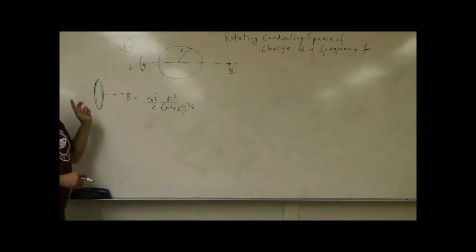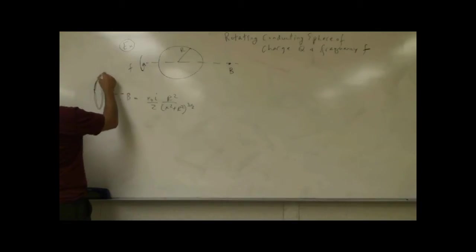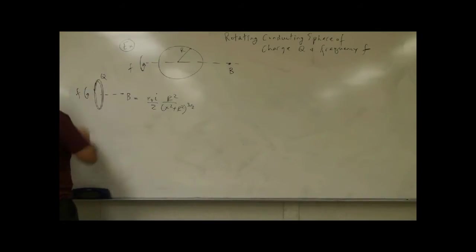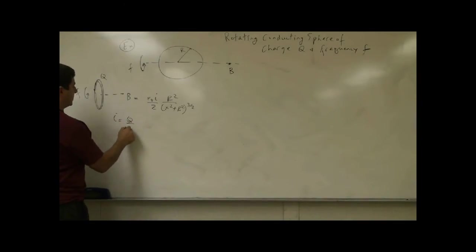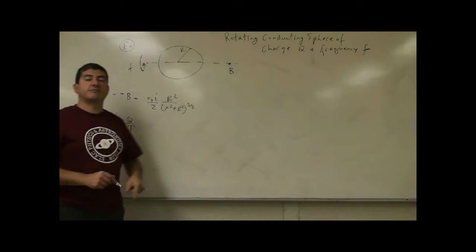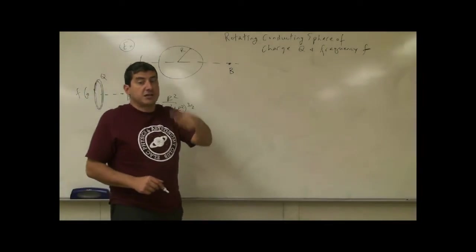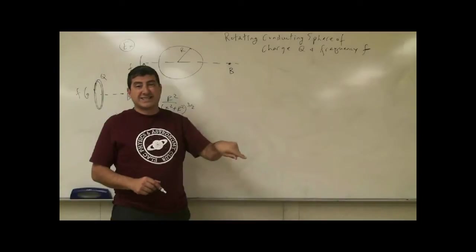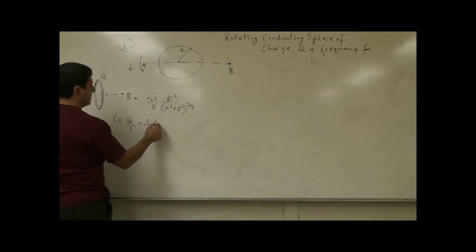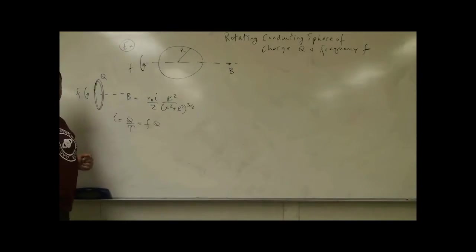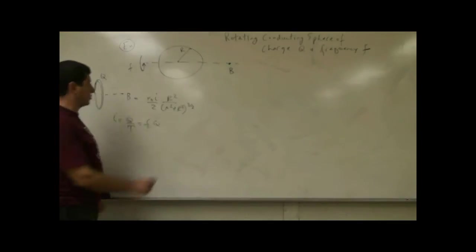Now if instead of a wire we have a charge q rotating with frequency f, what's the relationship? Current is equal to charge divided by the period — how much charge is flowing divided by how many seconds it takes for one cycle. One over the period is the frequency, so i can always be replaced by fq in these kinds of equations.